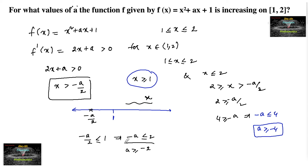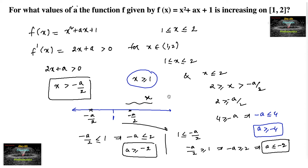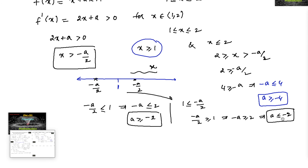We get a ≥ -2. Now suppose -a/2 is to the right side of 1; then 1 < -a/2, that is -a/2 ≥ 1, or -a ≥ 2, or a ≤ -2. So combining: a ≥ -2 and a ≤ -2.